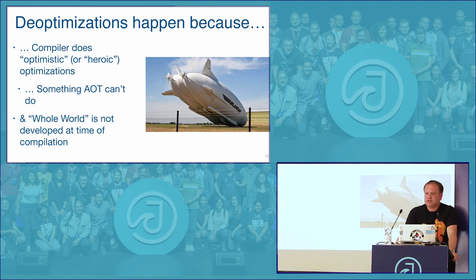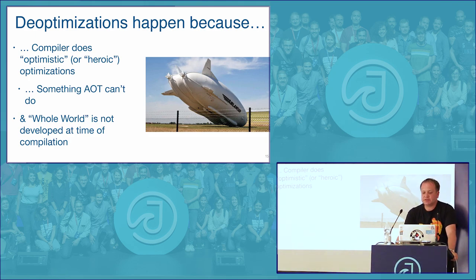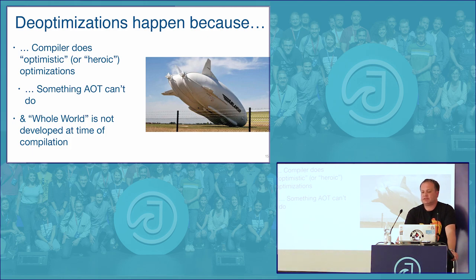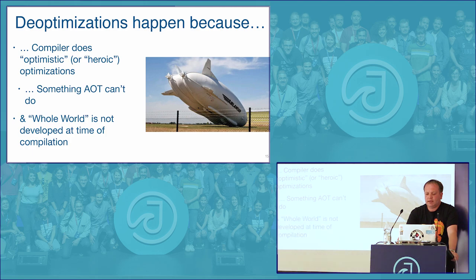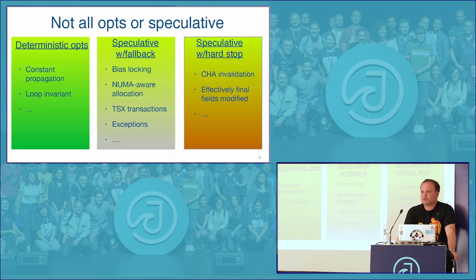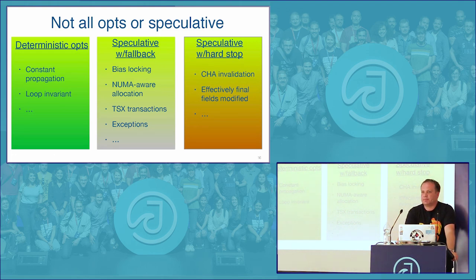Now let's talk about deoptimizations. There's an arrow back from compiled code to interpreted code. Deoptimizations happen because JIT compilers do a whole bunch of optimistic — or heroic — optimizations. That's something a typical ahead-of-time compiler cannot do, because it has no machinery to recover from incorrect assumptions, whereas the Java Virtual Machine does have that machinery. Not all optimizations are speculative — I consider them divided into three types. The first are deterministic ones: classical optimizations known from the theory of compilation since the 1970s and 80s, which nearly all modern compilers do and which can never fail.